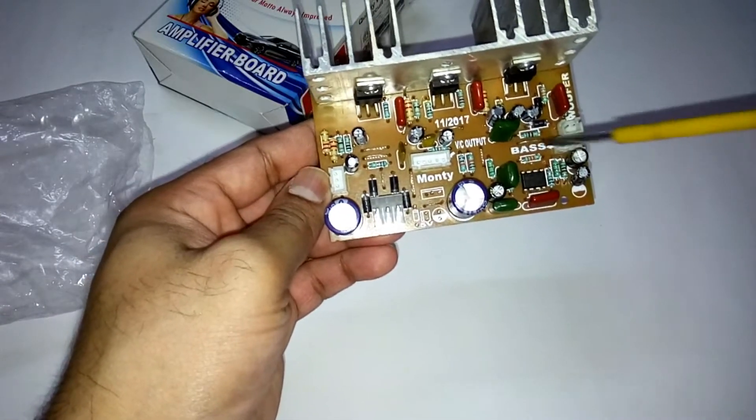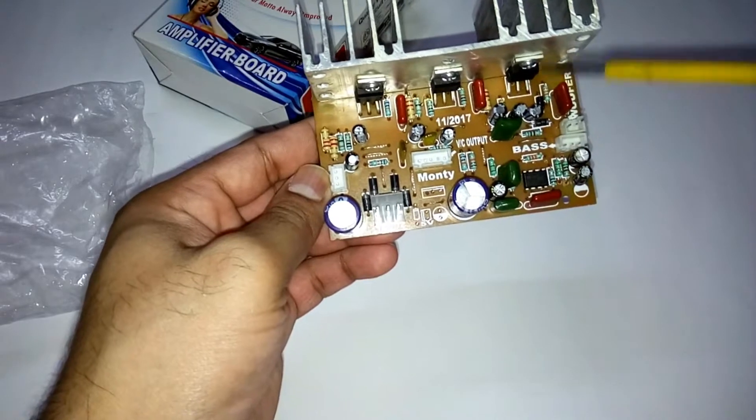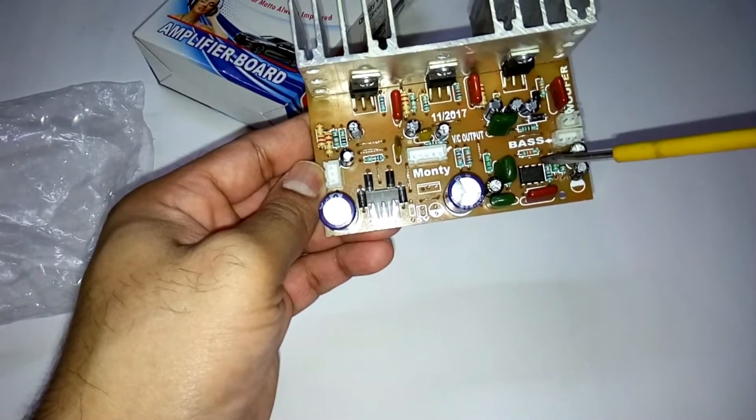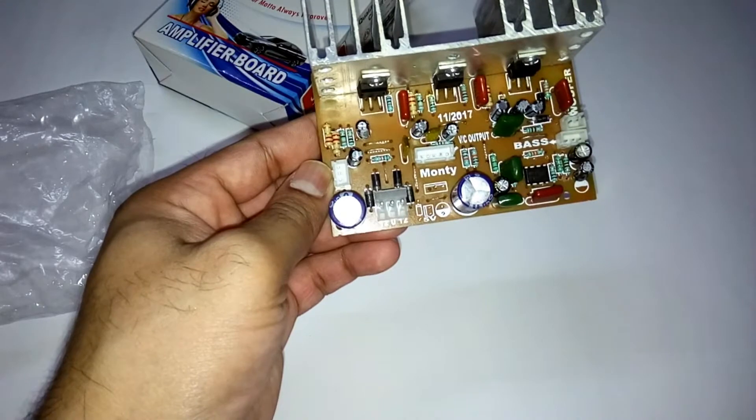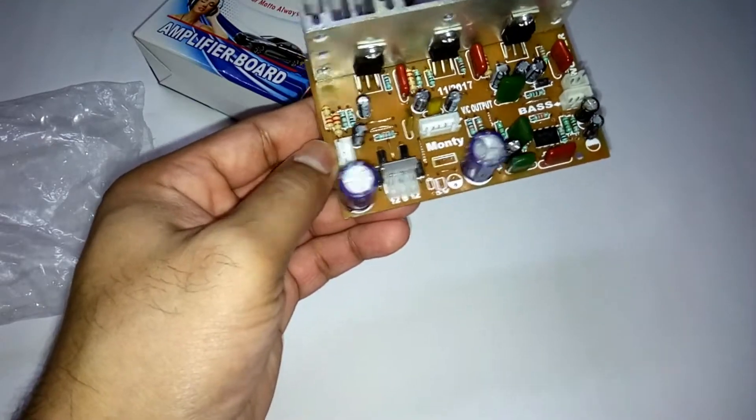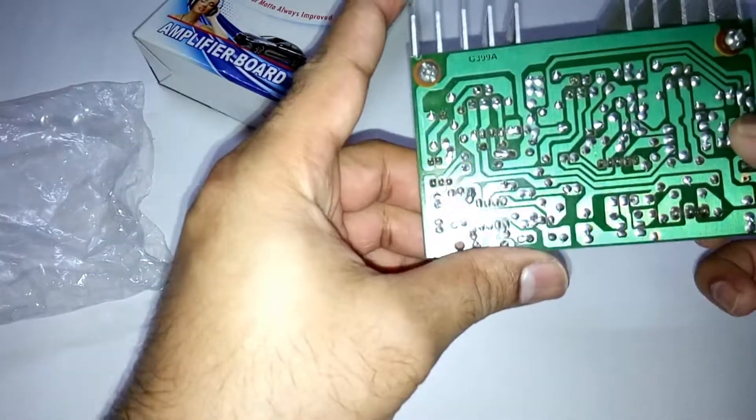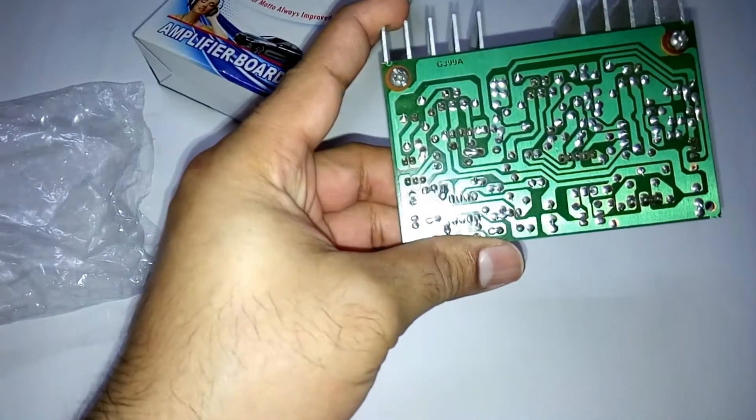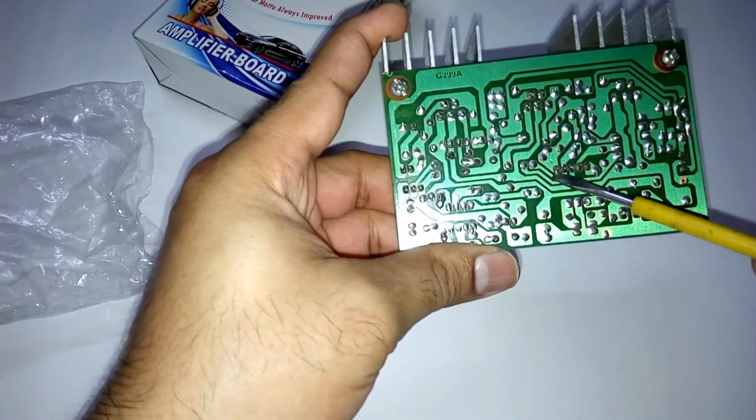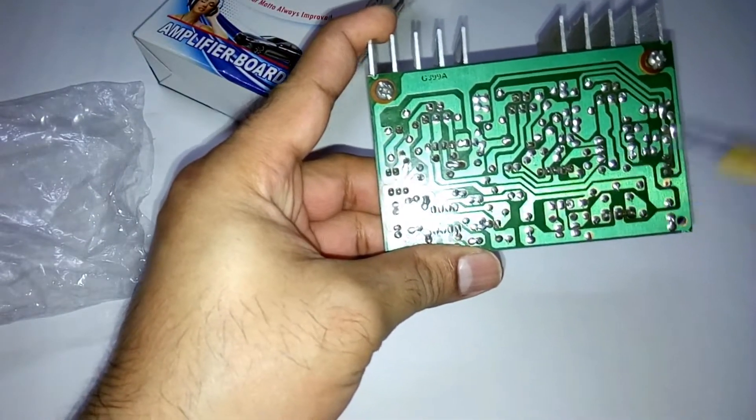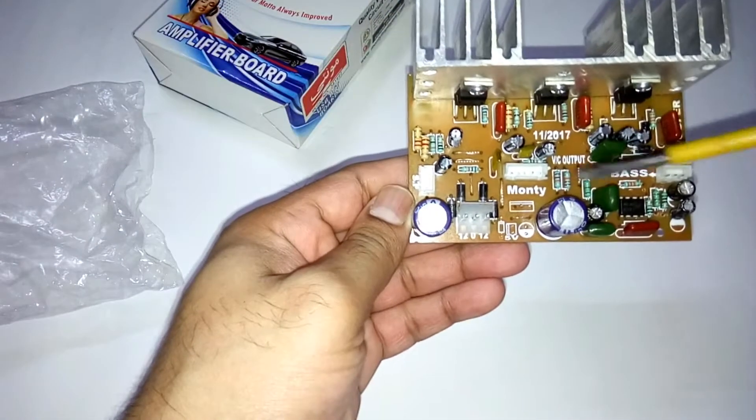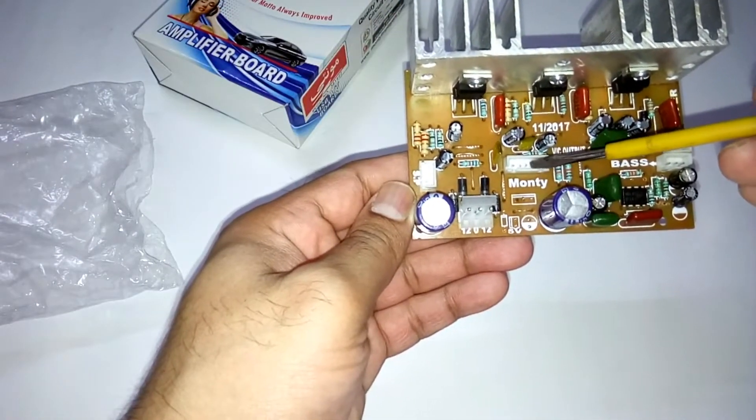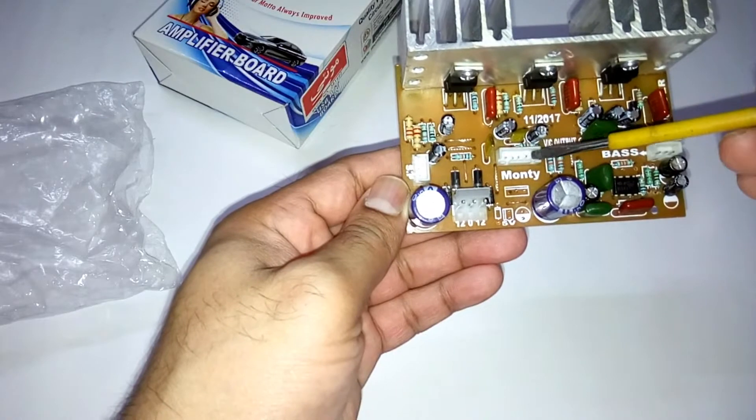And this is the subwoofer power and this side is the subwoofer. These two are the channels, left and right channel. The input connections, you can see these five pins over here. This is the volume controller connections.